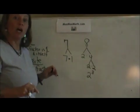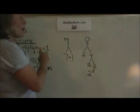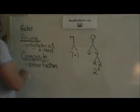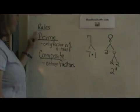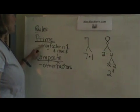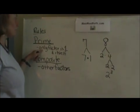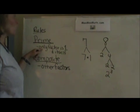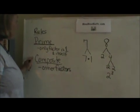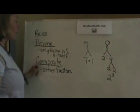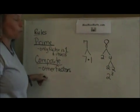Now let's define the rules of prime and composite numbers. Prime means it only has a factor of 1 and itself. So 7 factored only to 1 and itself, versus a composite number that has other factors besides 1 and itself.